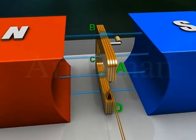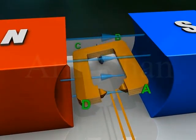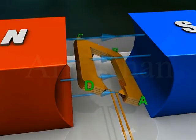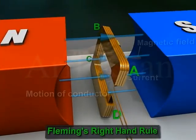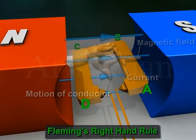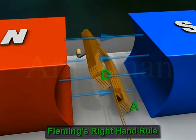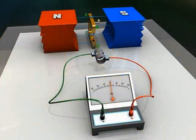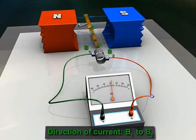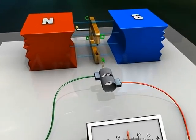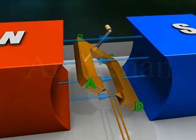As the armature undergoes a half rotation clockwise, arm AB moves down while arm CD moves up. According to Fleming's right-hand rule, the current will flow in the direction DCBA, so the current will flow from B1 to B2 through the galvanometer.